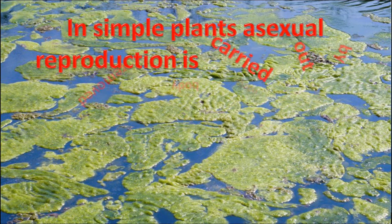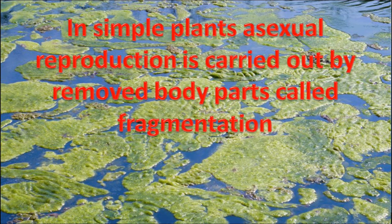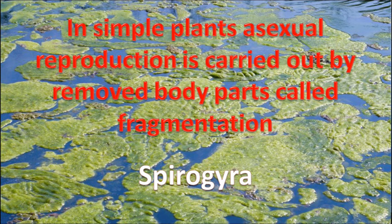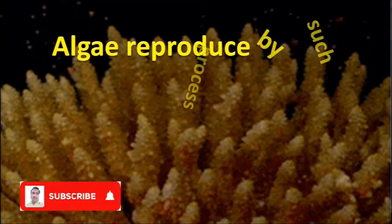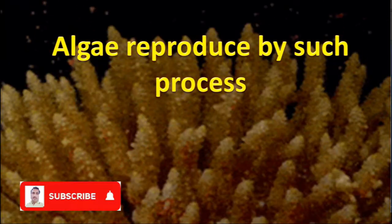In simple plants, asexual reproduction is carried out by removed body parts, called fragmentation. Spirogyra reproduces by the fragmentation process — its body fragments and each piece changes into a new Spirogyra. Algae also reproduce by such a fragmentation process.